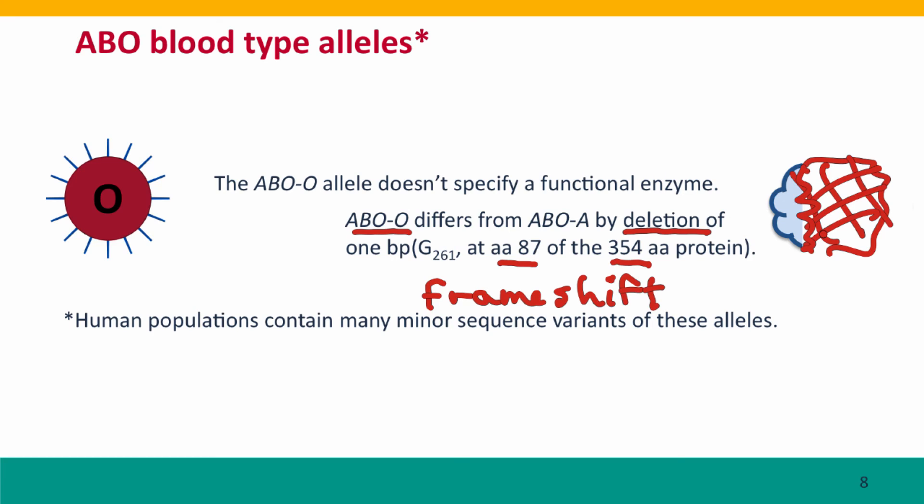I should also mention that there are many other alleles and many other loci affecting blood type, and there are many minor variations of the ABO alleles. These are important in particular medical situations, but we won't be talking about them in the context of this course.